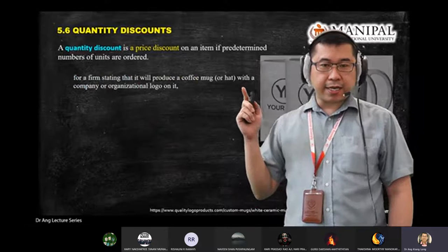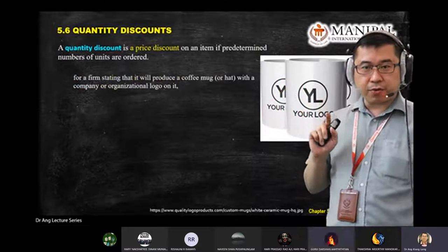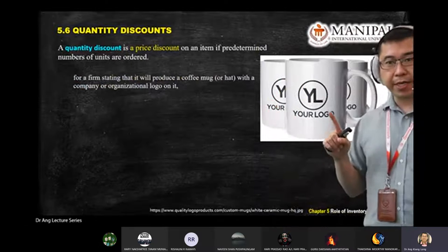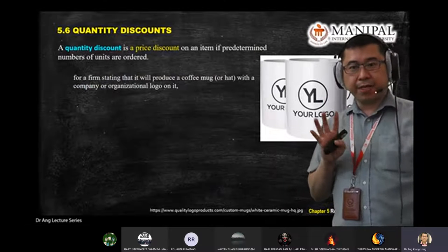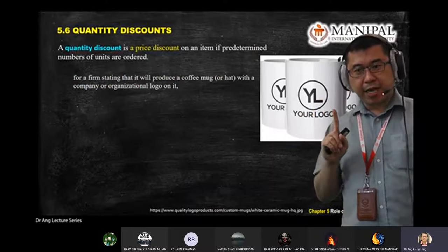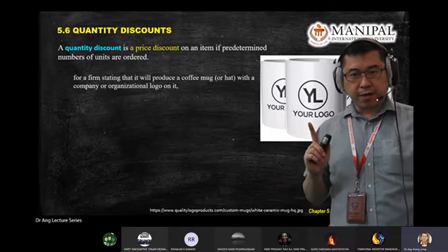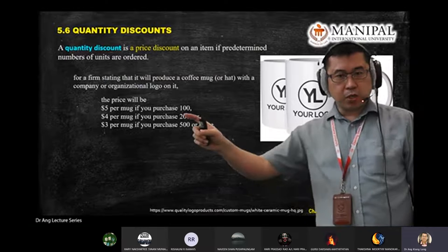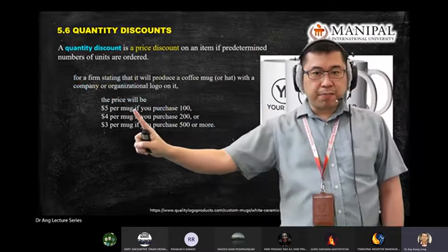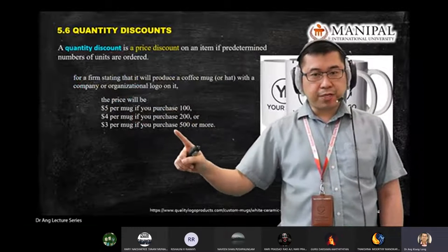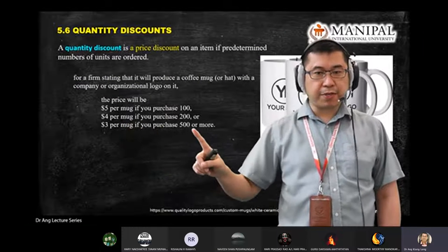Let's say you have a firm that produces merchandise with a logo — every time there's an annual dinner or celebration, a company prints logos or wishes on mugs or pens. Under quantity discount, you have this kind of scenario: $5 per mug if you purchase 100, and as you purchase more, the price goes down — $3 if you purchase 500 or more.